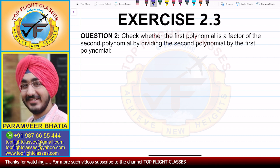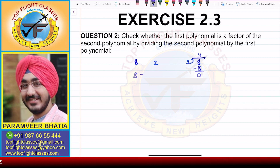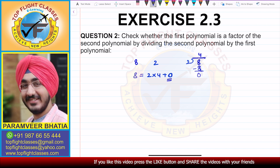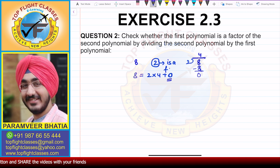First, we need to know what is a factor. Suppose I have the number 8 and the number 2. If I divide 8 by 2, I get 2 into 4 is 8, and I get 0 as the remainder. So I can write 8 = 2 × 4 + 0. Since the remainder is 0, 2 is said to be a factor of the dividend — so 2 is a factor of 8.